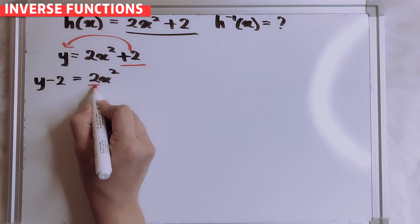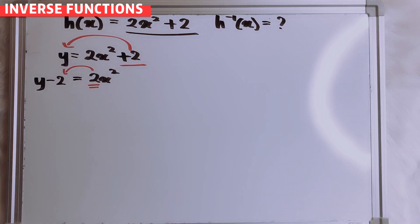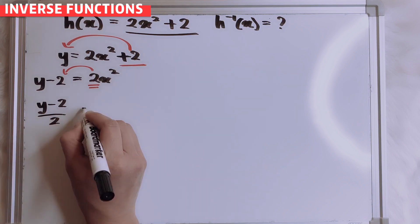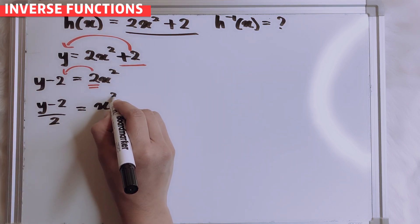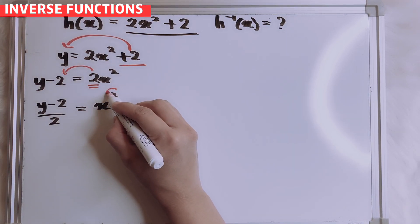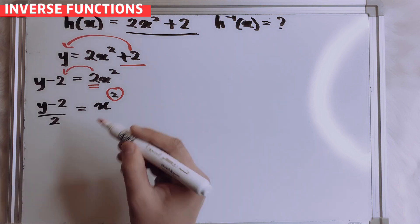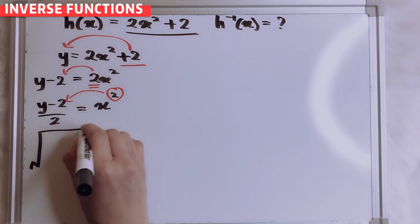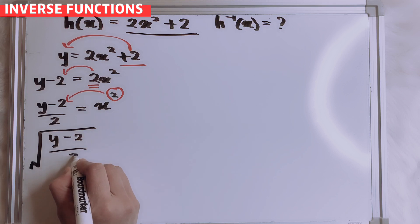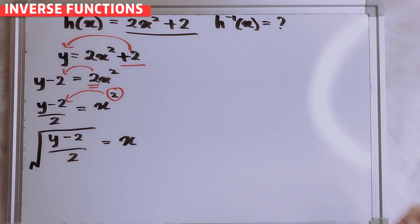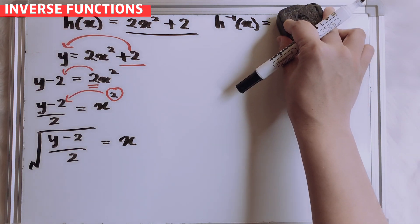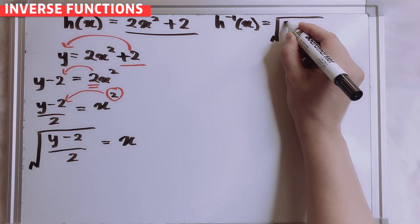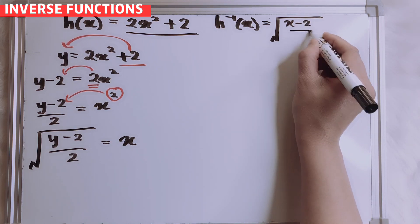Then I want to bring the 2 to this side. So this is multiply — opposite of multiply is divide. So y minus 2 divided by 2 equals to x squared. Then I want to move the square, so I want to bring to this side, so it will be square root. Square root of y minus 2 over 2 equals to x. So our h inverse x is square root of x minus 2 over 2.